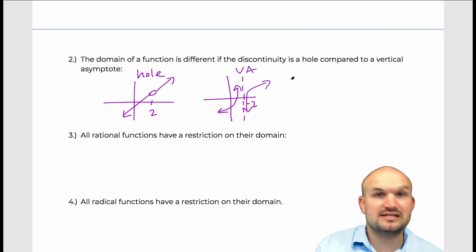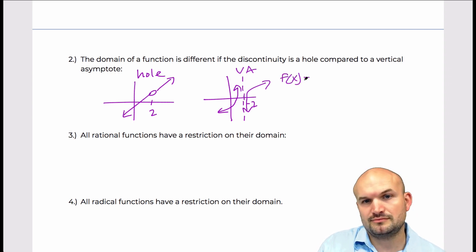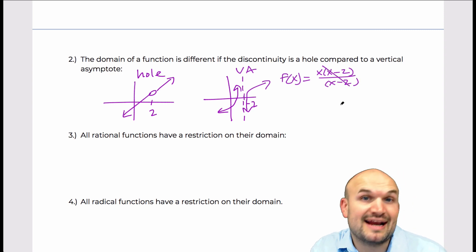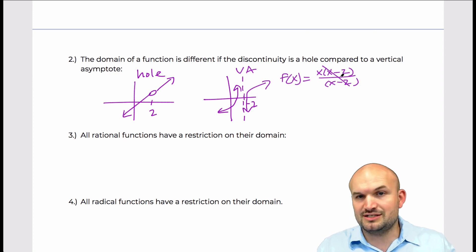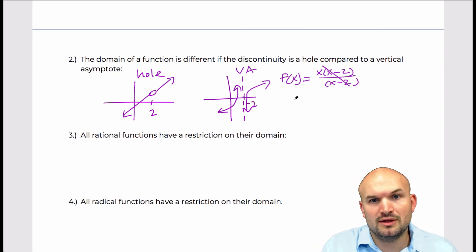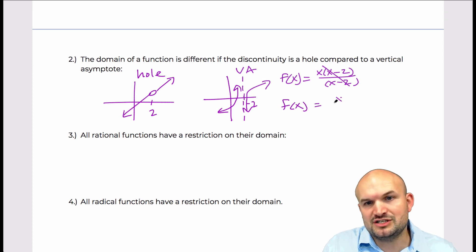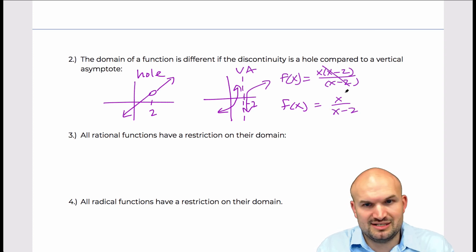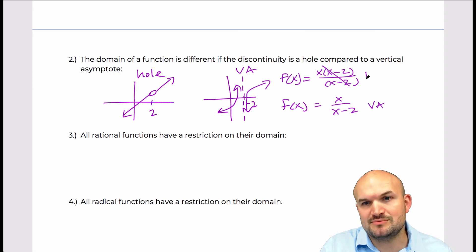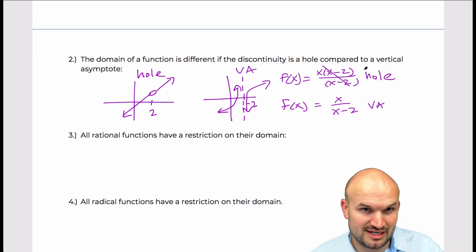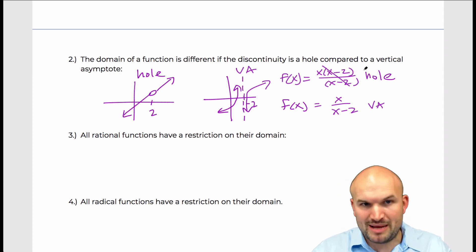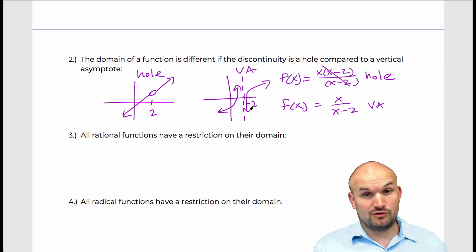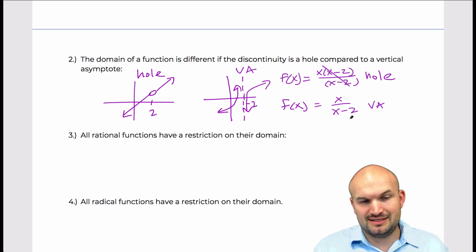Where we usually get stuck is when dealing with the algebraic approach. When students are simplifying a function, what they sometimes get is something like x times (x minus 2) over (x minus 2). They see that the (x minus 2)'s divide out, so they think it's no longer there. But what that tells you is that the discontinuity is removable — it's a hole. In comparison, if you just had x over (x minus 2), since the discontinuity at two is not removable, that means it's a vertical asymptote. So it does not matter if the discontinuity is a vertical asymptote or a hole in regards to the domain — the domain does not change.